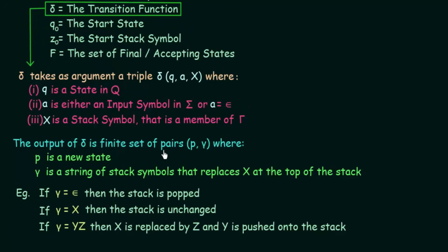The output of the transition function delta is a finite set of pairs given by P and lowercase gamma. So delta takes the three arguments Q, A, and X and produces an output of the form (P, gamma). P is a new state from the set of states. Gamma is a string of stack symbols that replaces X at the top of the stack.